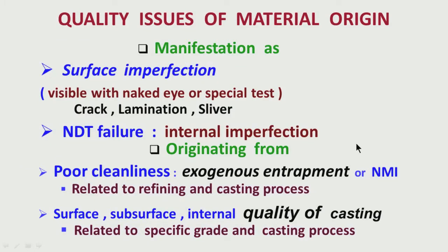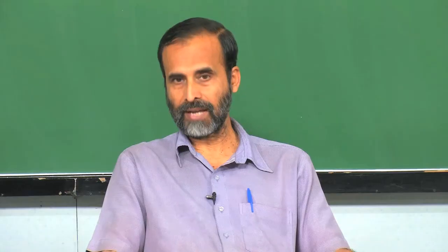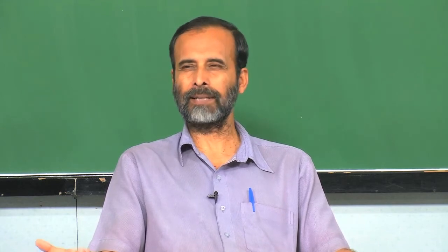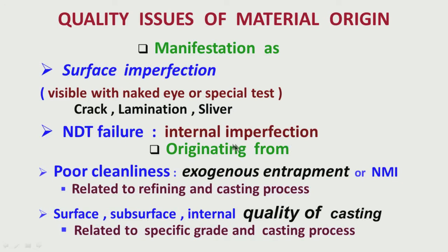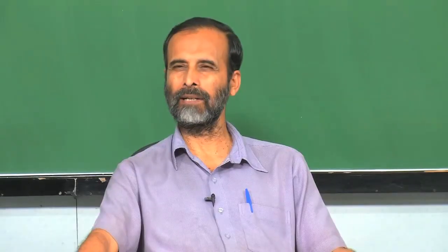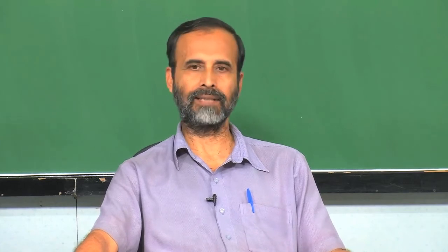Another important imperfection which might crop up and which you cannot see on the surface are internal defects — internal imperfections. Those defects can only be seen through non-destructive testing. These two broad categories of defects originate from the poor cleanliness of the steel product. Under that, I talked about non-metallic inclusions — whatever residual elements are present in the steel beyond certain limits will form inclusions: oxides, sulphides, oxysulphides, and so on.